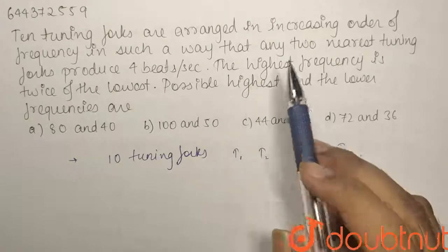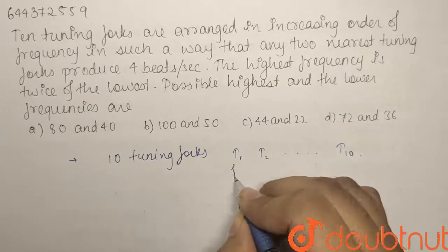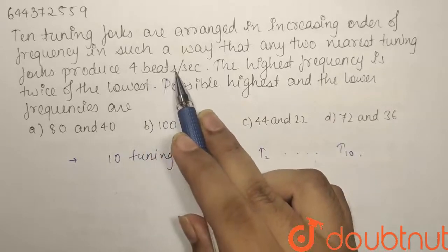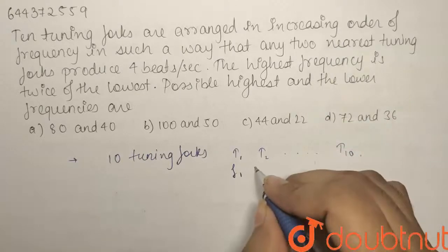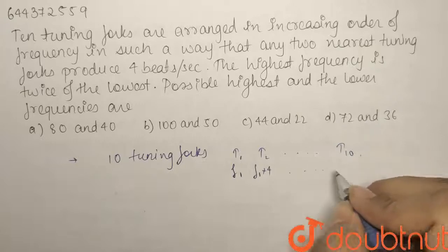Now the other data that is given is that they are arranged in increasing order of frequencies. So if T1 is F1, the number of beats produced are 4 and they are arranged in increasing order. So it means T2 will be F1 plus 4.